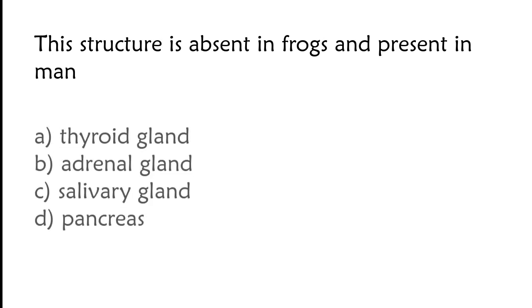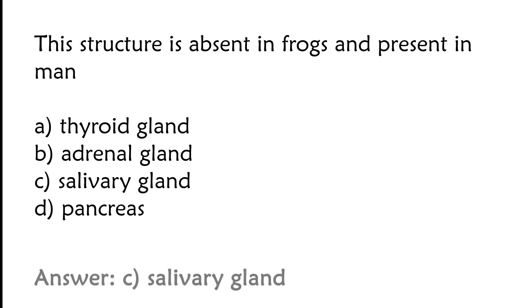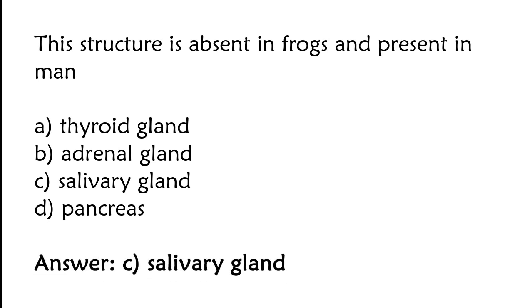This structure is absent in frogs and present in men. Options: thyroid gland, adrenal gland, salivary gland, pancreas. The correct answer is option C. Salivary gland is absent in frogs and present in men.